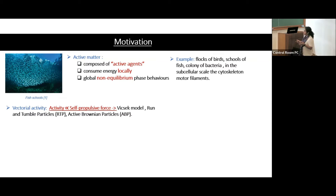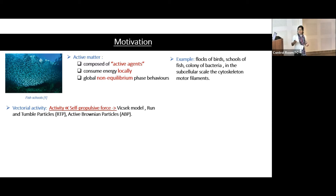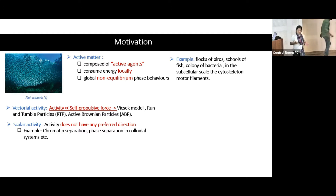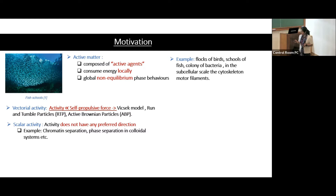Conventionally, active matter is vectorial in nature due to the force of self-propulsion — particles have a preferred direction for motion. There are many models that mimic this bacterial activity, such as the V-shaped model, run-and-tumble particles, and active Brownian particles. But there are also many physical and biological systems, like chromatin separation in the nucleus or phase separation in colloidal systems, where activity does not need a preferred direction. This type of activity is called scalar activity.